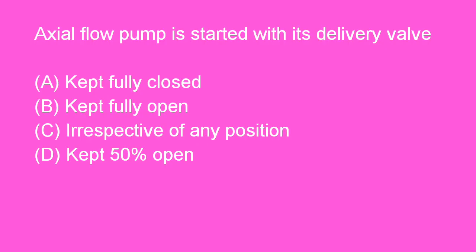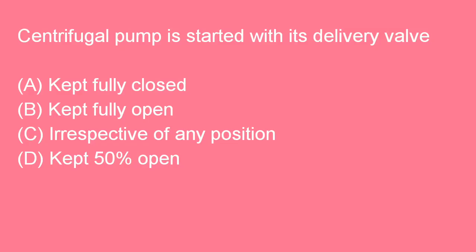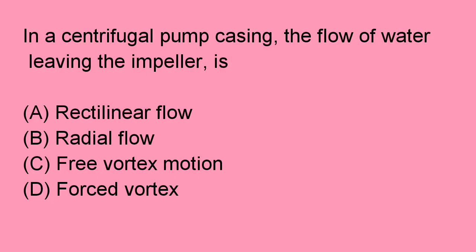Next question: Axial flow pump is started with its delivery valve kept fully open. Option B is right. Next question: Centrifugal pump is started with its delivery valve kept fully closed. Option A is right. Question: In a centrifugal pump casing, the flow of water leaving the impeller is free vortex motion. Option C is right.